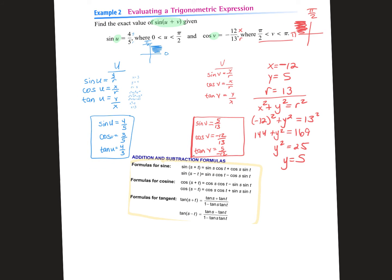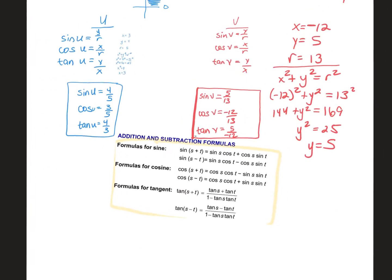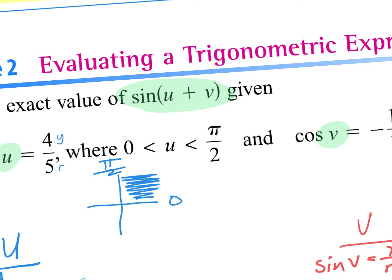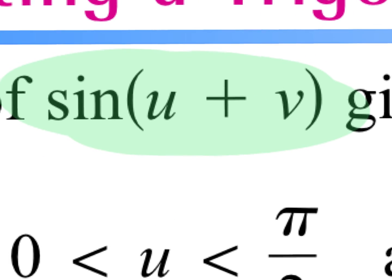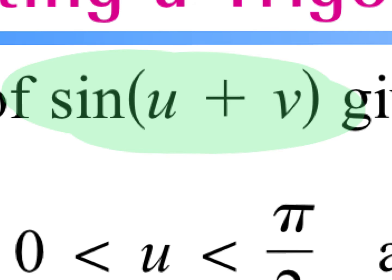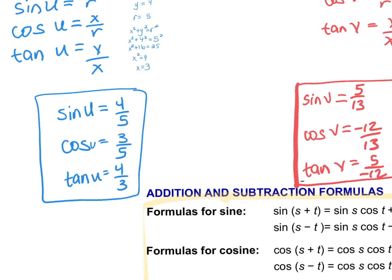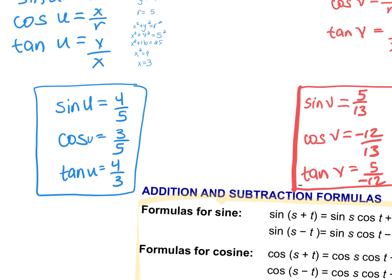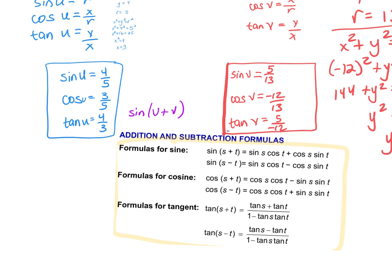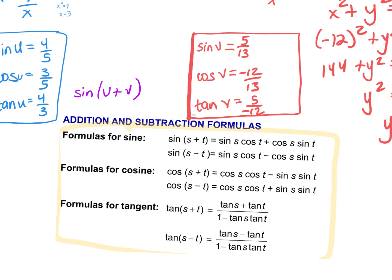Go back to the beginning because we have not answered the question yet. What are they asking me to find? Sine of U plus V. So which formulas do I look at? Sine, cosine, or tangent? Sine. And I want which one? The top one. Because they're telling me. So the letters are S and T. It doesn't matter. Replace them with U and V.